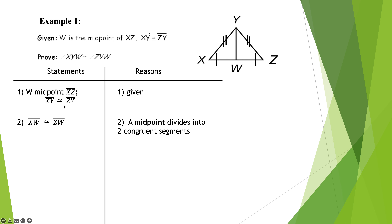Here's where students make a mistake. They'll look at the angles over there by point W and say those are right angles. No, they're not — absolutely not. They might be, but there's no way we can guarantee that because it doesn't say it in the given. Just because something looks like right angles doesn't mean I can conclude it. 'It looks like it' is not a good enough reason.